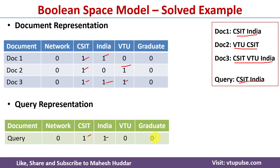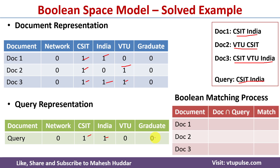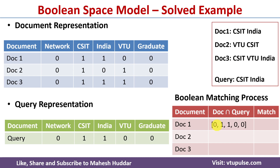Once documents and query are represented in vector form, the next step is to apply the matching principle and retrieve the top two documents. We use a logical AND between the document vectors and the query vector — if both terms are present in the document and query, we note it as one, otherwise zero. For Document 1, applying logical AND gives us: 0 1 1 0 0.